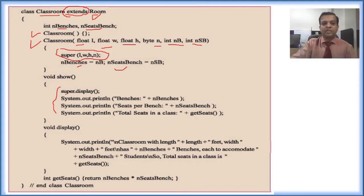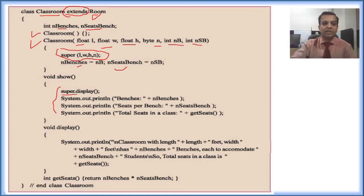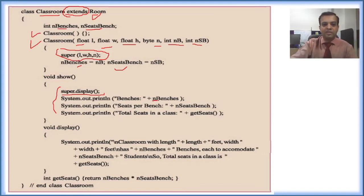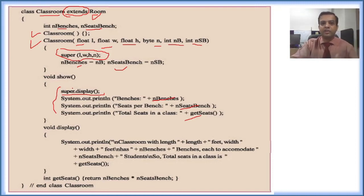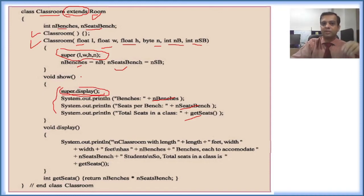The super method is used to call the constructor of the parent class. It calls the four-argument constructor of Room which initializes length, width, height, and their values. The remaining attributes — end benches and sit per bench — are taken separately. The super.display() method means: use the display method of the super class. So Room class's display method will run and print height, width, and end windows, while Classroom prints end benches and total seats.